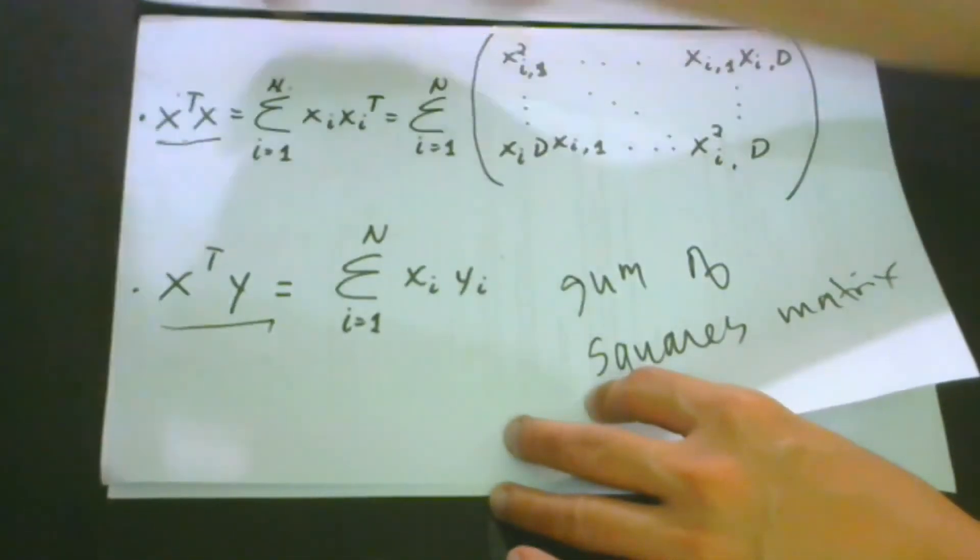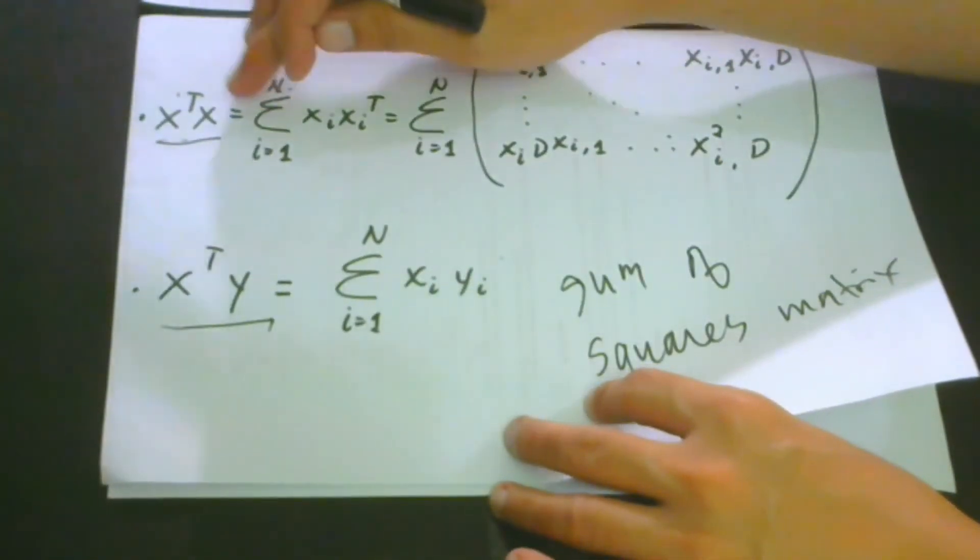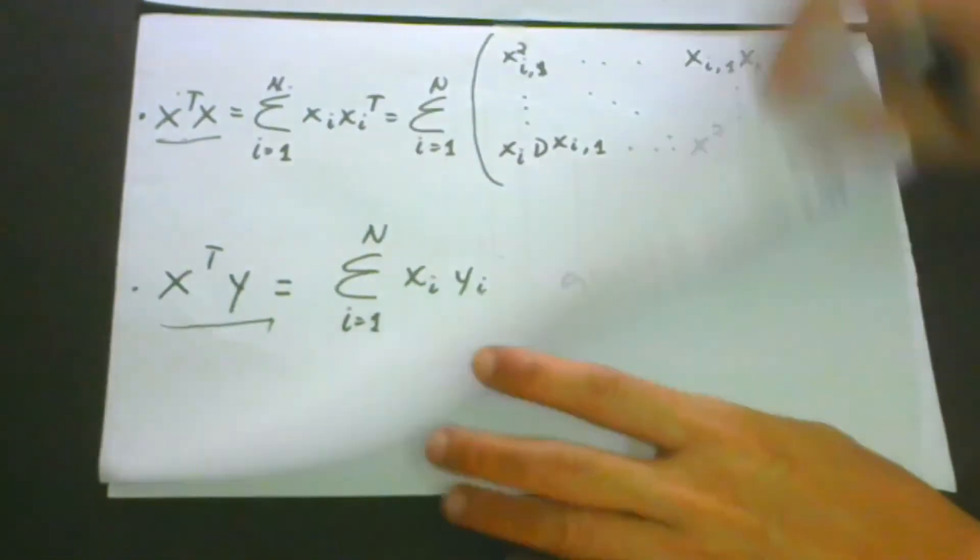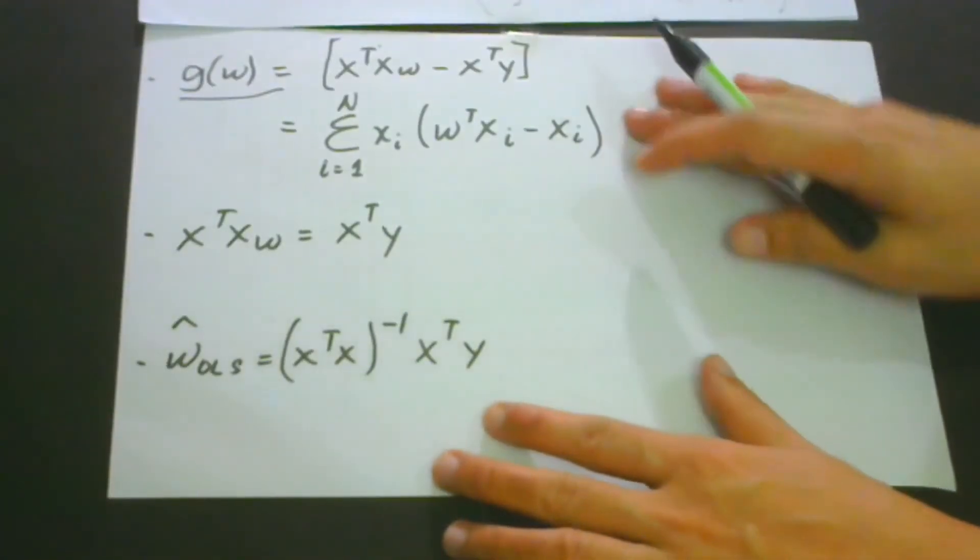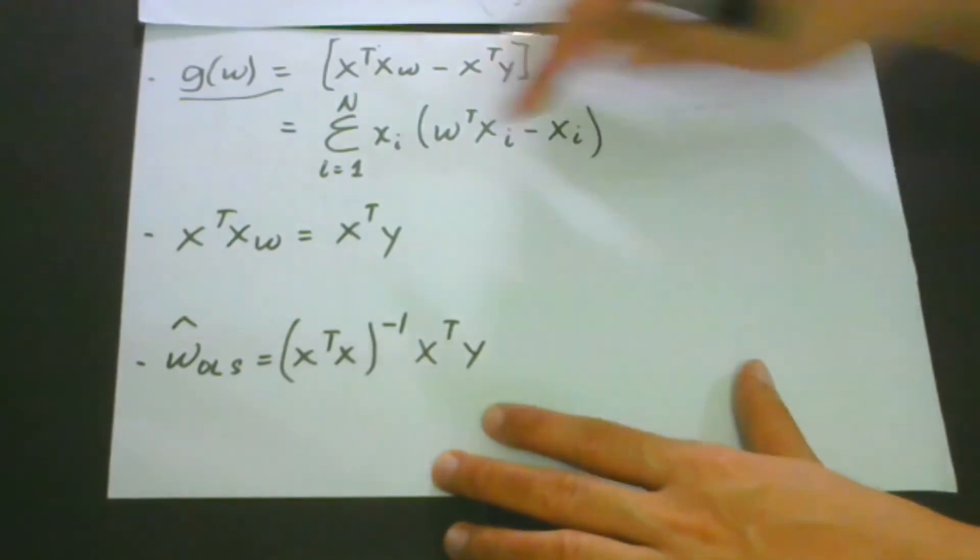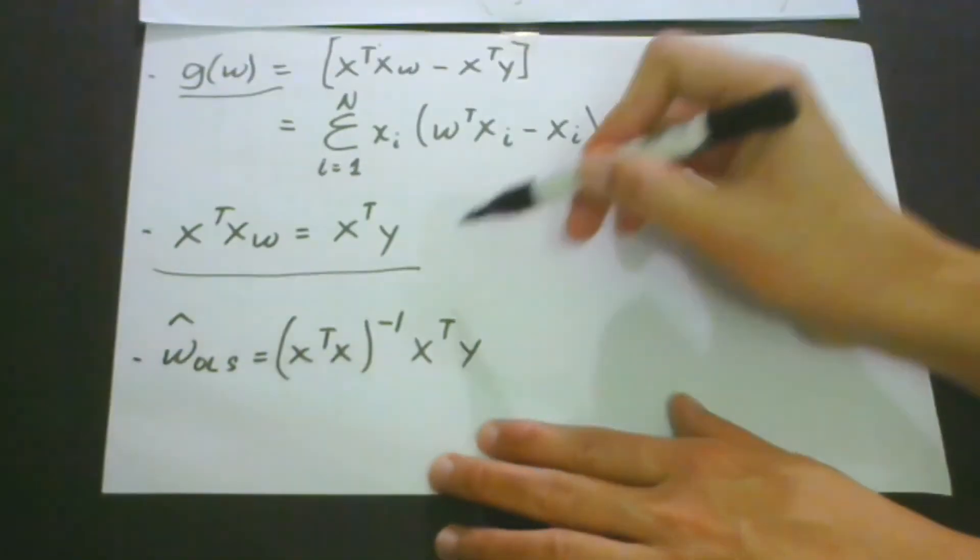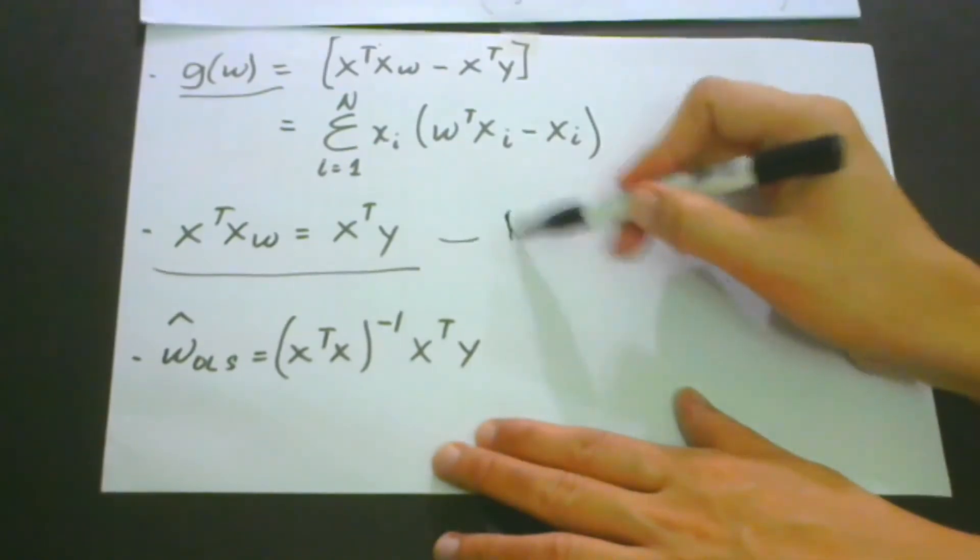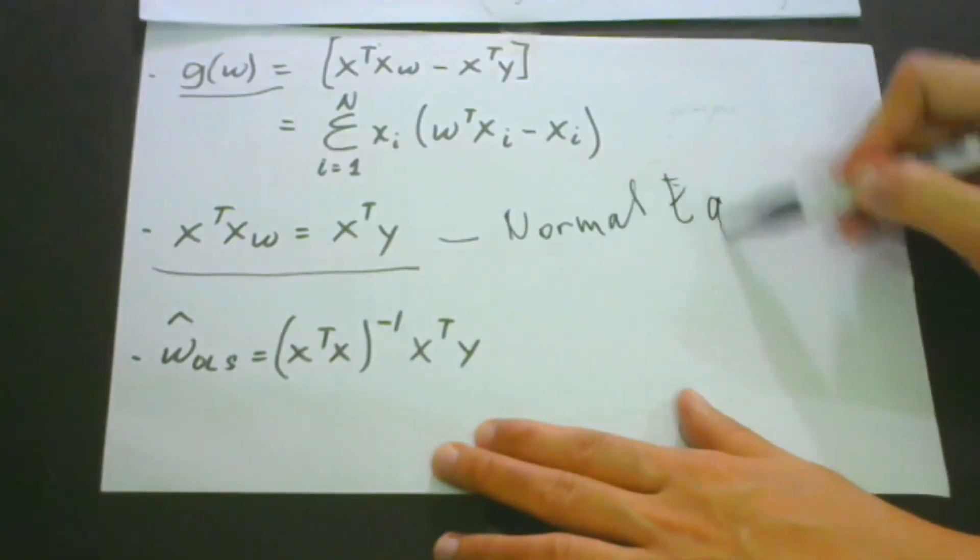As you could see, this one, right? And then here, but only that we multiply the parameter w. If we are going to process and equate this one to zero, then we will get this one. And this is what we call the normal equation.